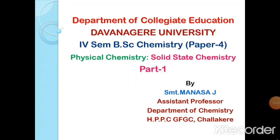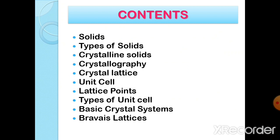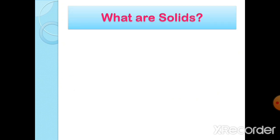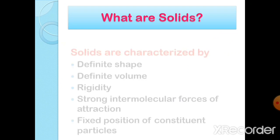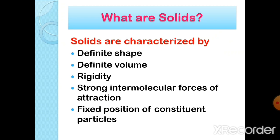Hello students, welcome to MJ's Chemistry Classes. This is my first video on solid state chemistry. In this video we will be discussing about solids, types of solids, crystalline solids, crystallography, crystal lattice, unit cell, lattice points, types of unit cell, basic crystal systems, and Bravais lattices. First, let us know what are solids. Solids are characterized by definite shape, definite volume, rigidity, strong intermolecular forces of attraction, and fixed position of constituent particles.